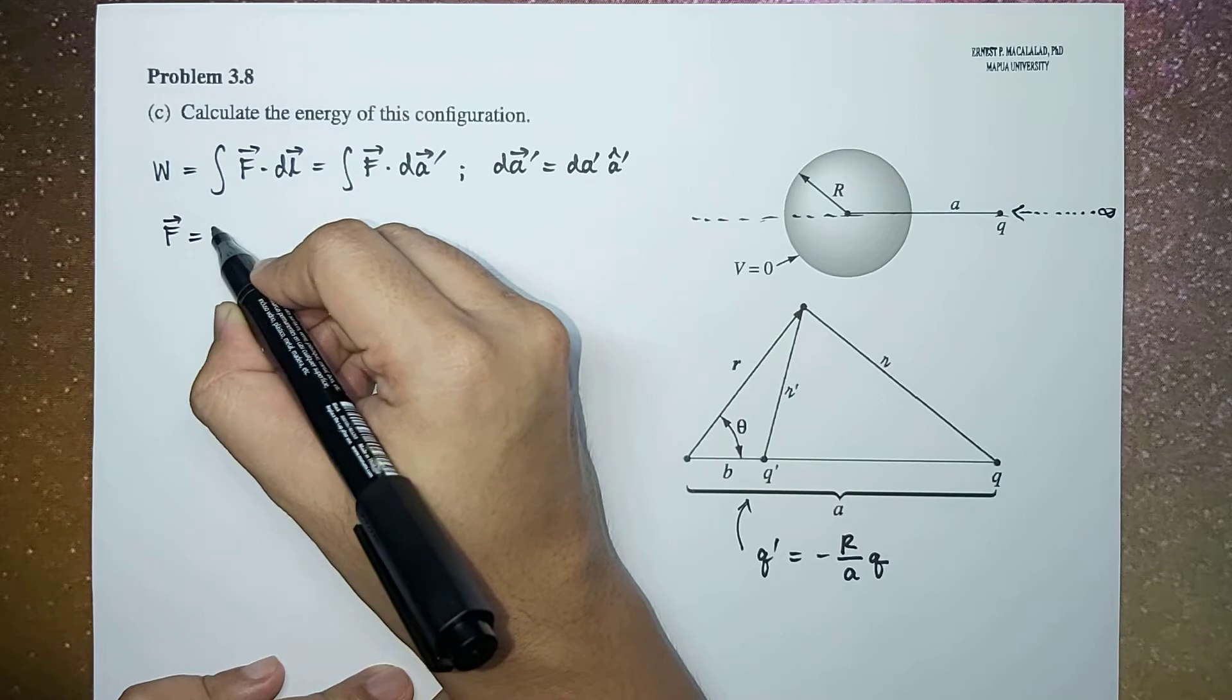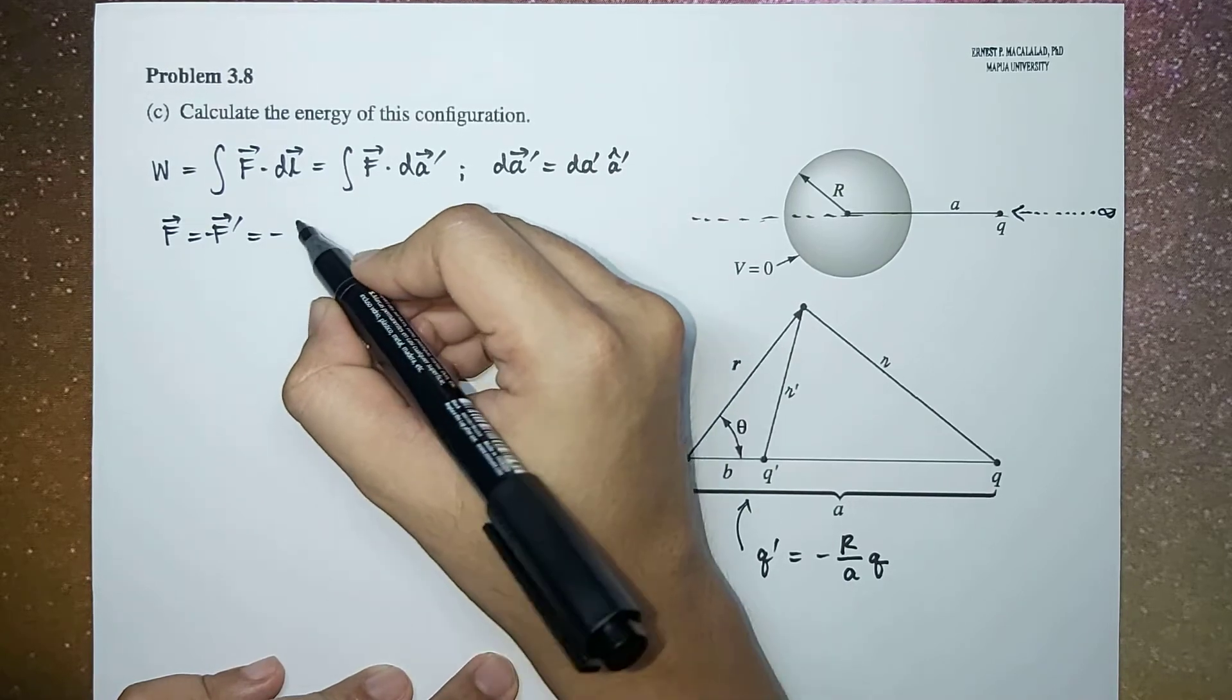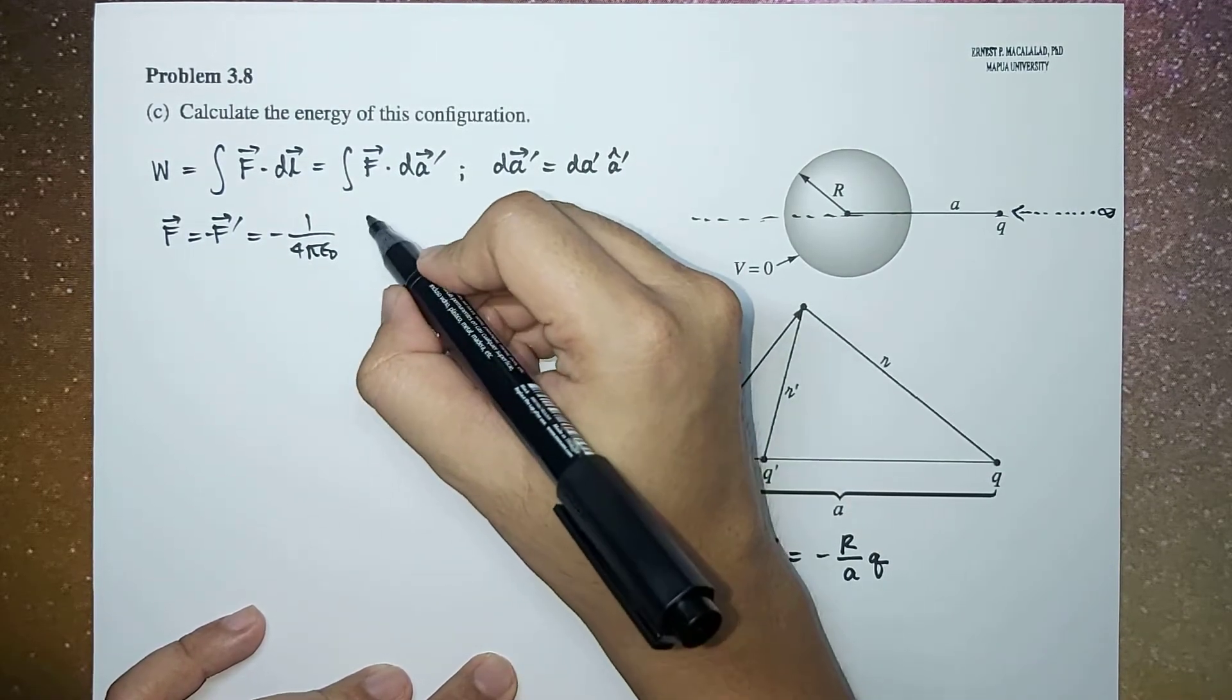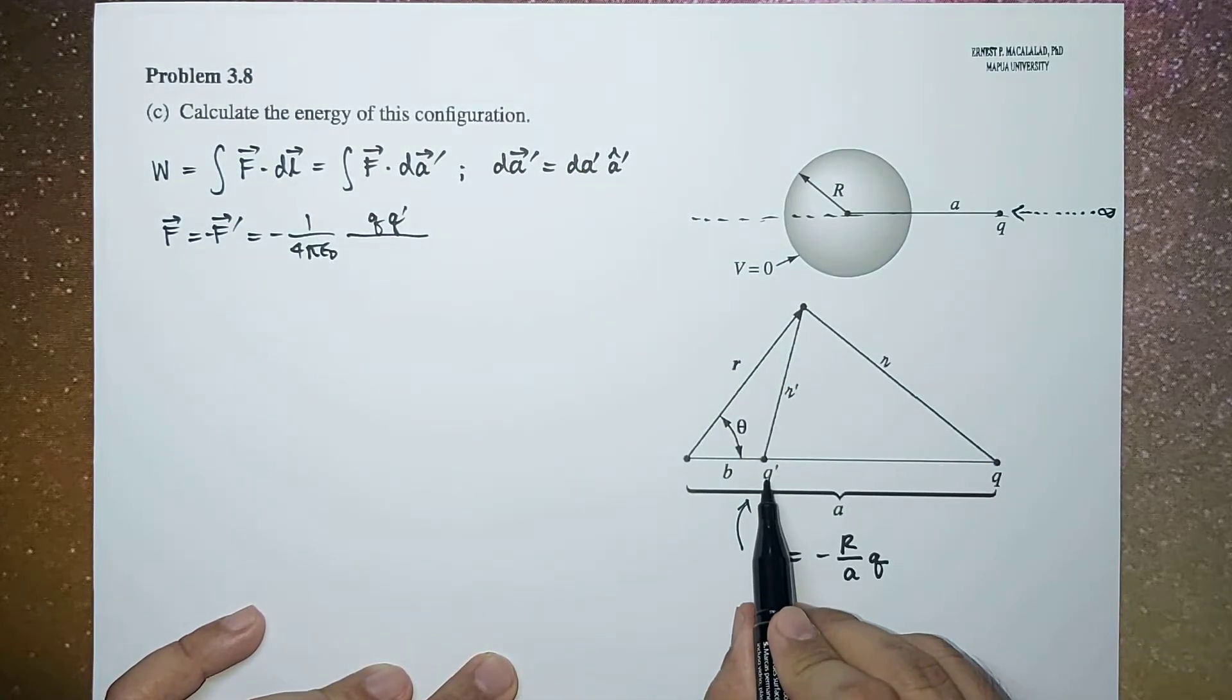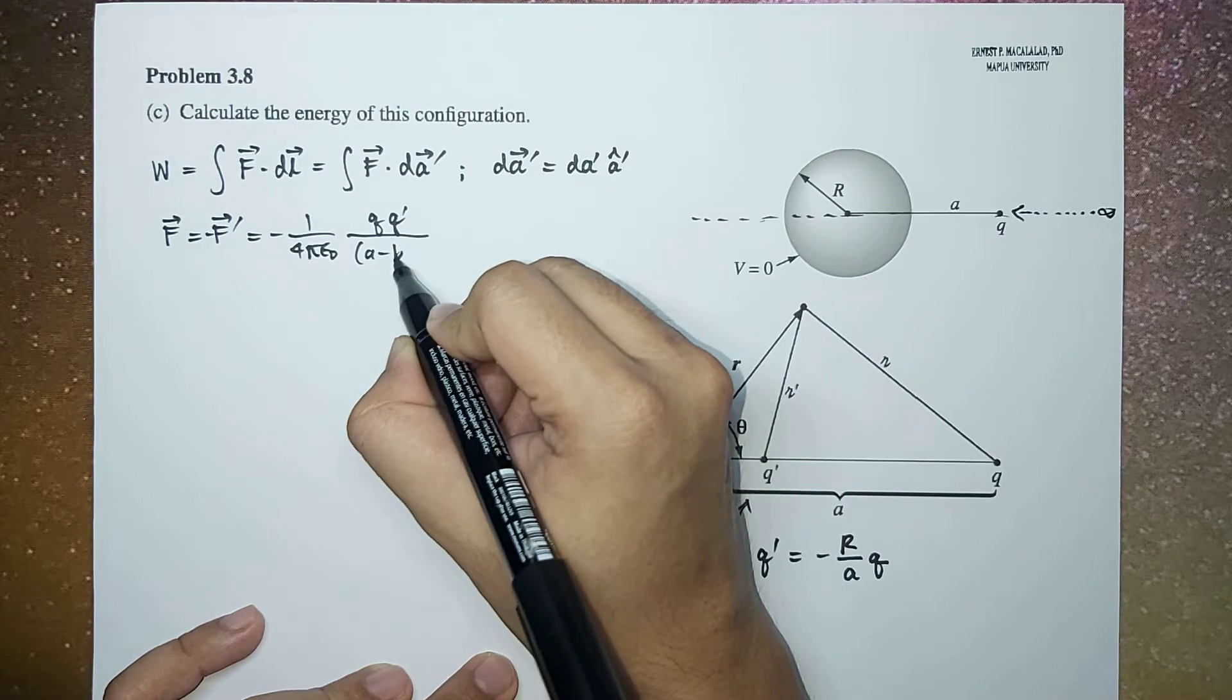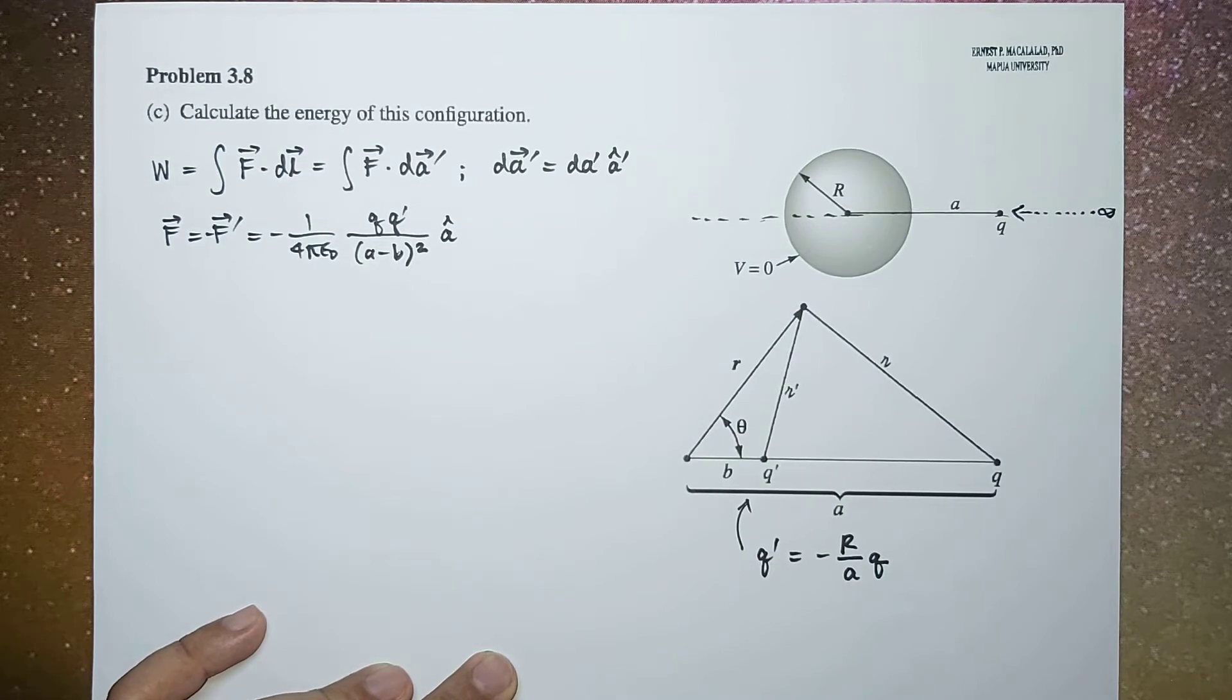So this F would be equal to negative F prime, where F prime is equal to the force between q prime and q. That's negative 1 over 4 pi epsilon naught times q q prime divided by the distance between q prime and q, which is (a minus b) squared, and the direction is a prime hat.